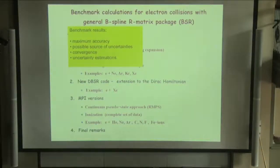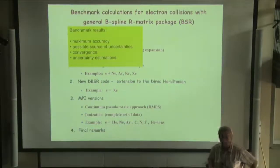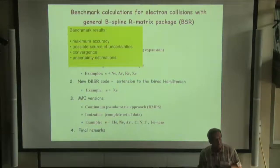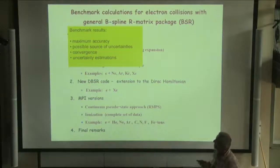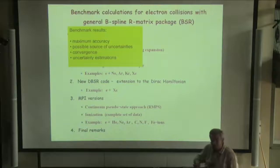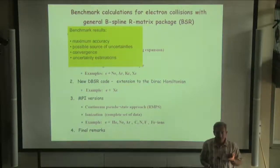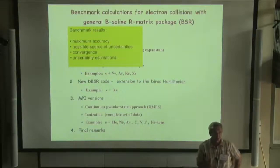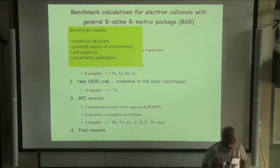In the title, we put benchmark results. Benchmark results for us means that we try to make the calculation with maximum accuracy. It includes careful analysis of possible uncertainties due to limitation of method or codes. An important question here is the question of convergence, and then using these results to estimate the uncertainty for the cross-section by comparison with measurements or another calculation.